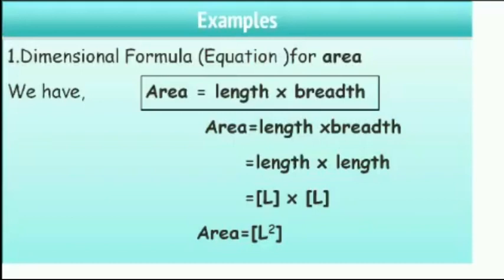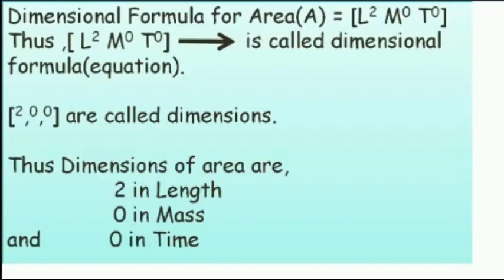Let us see examples of dimensional formula. First, for area: area is equal to length into breadth, which equals L × L, so area equals L². In mechanics, length, mass, and time are taken as the three base dimensions, represented by L, M, and T respectively. The dimensional formula for area is written in square brackets as L², M⁰, T⁰.